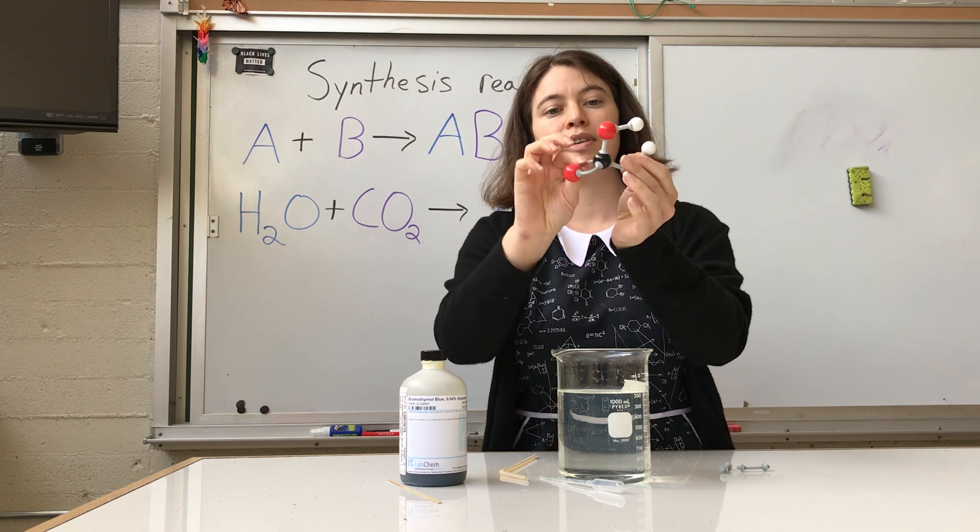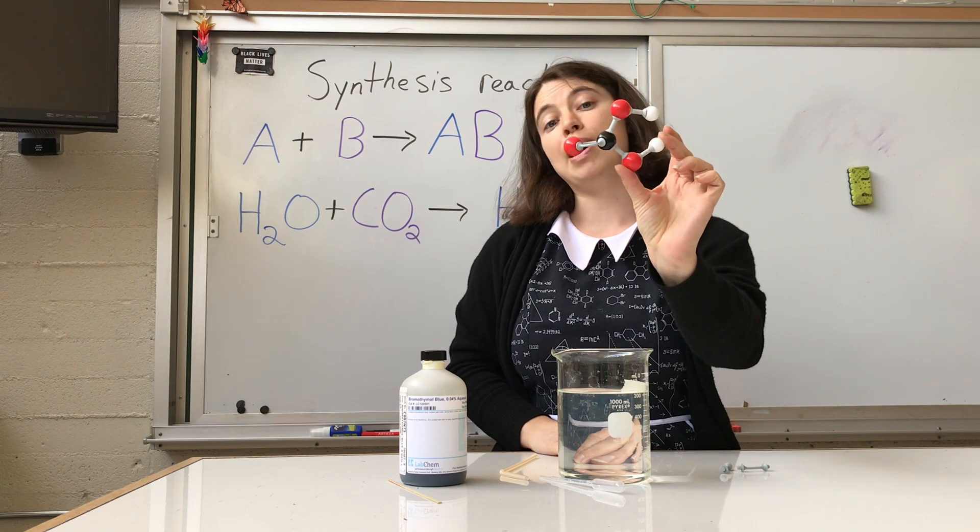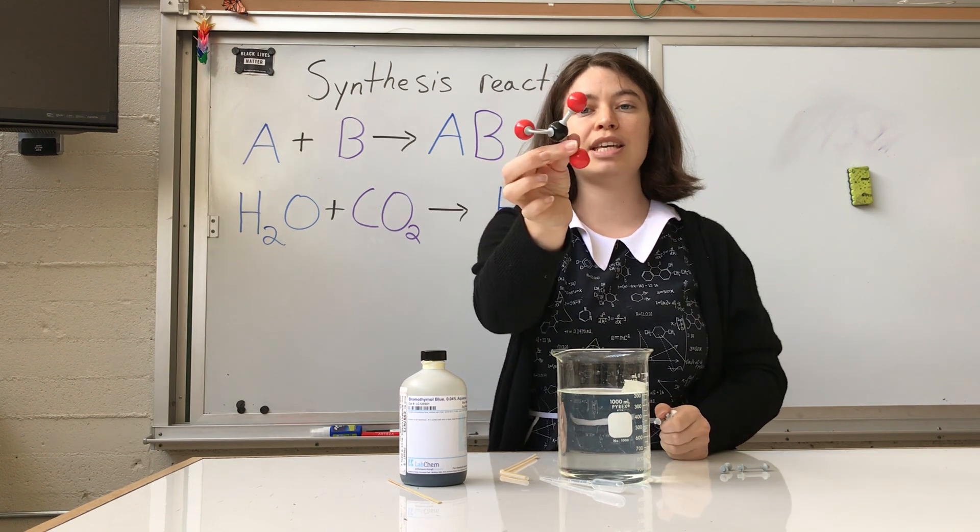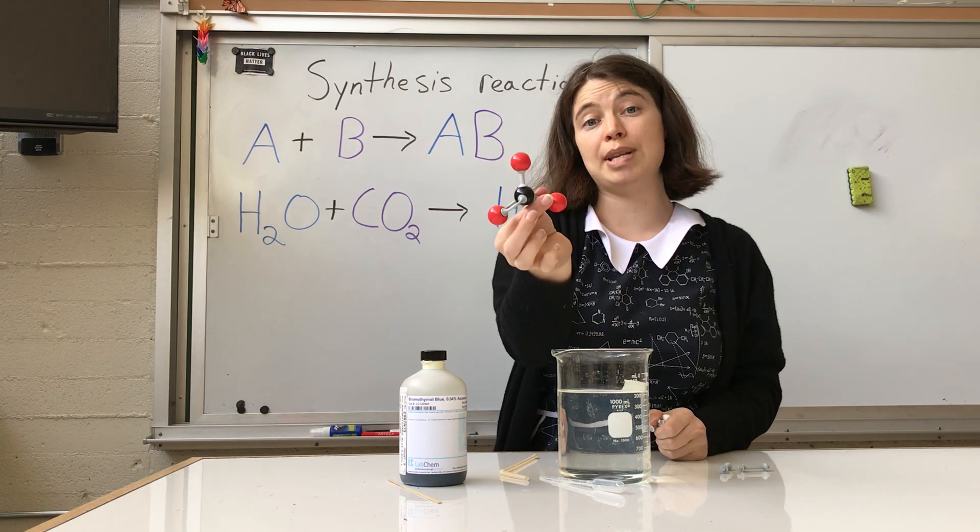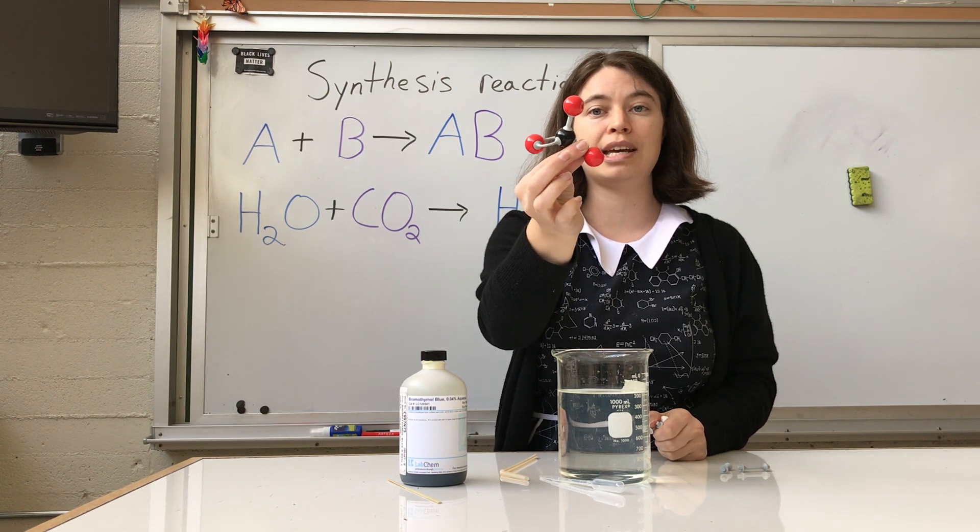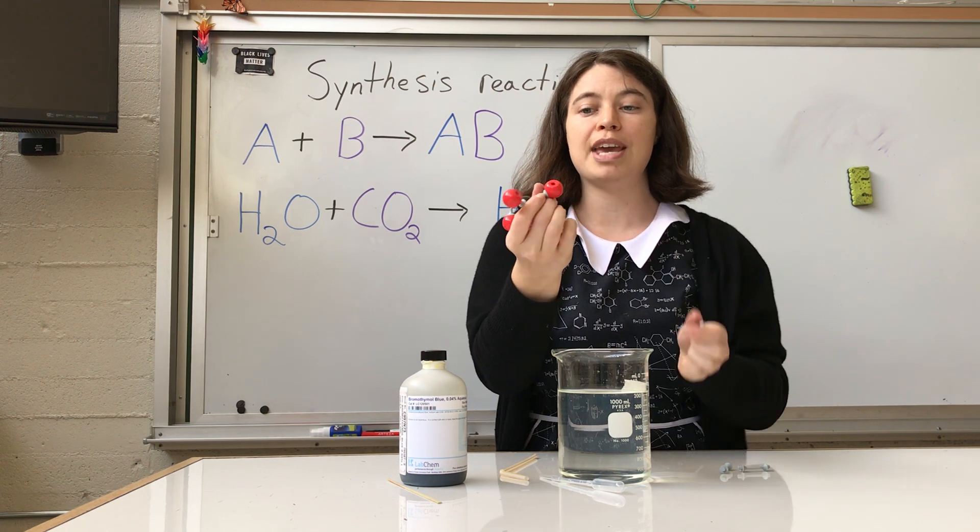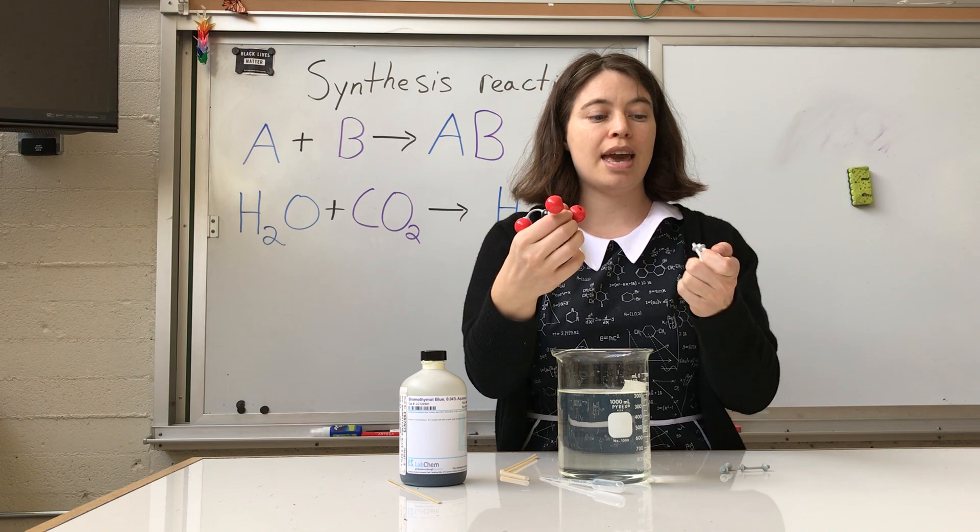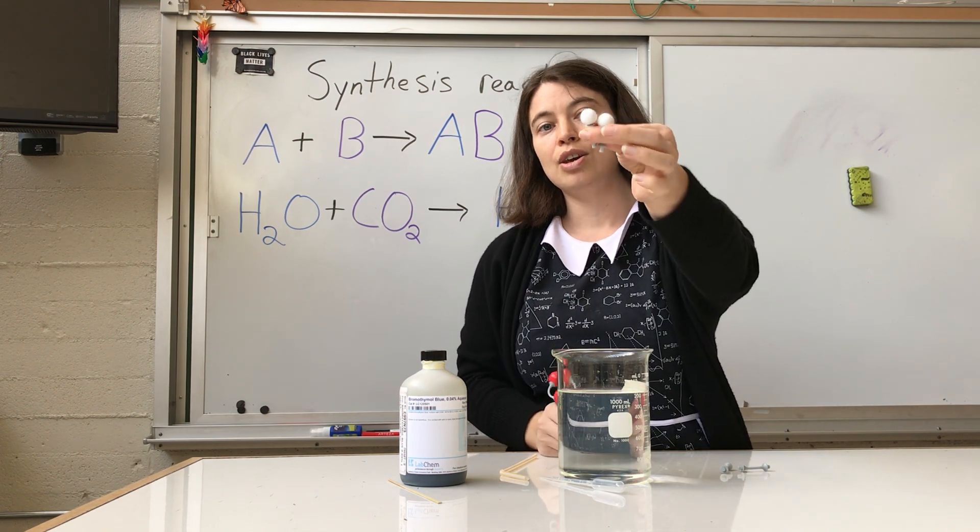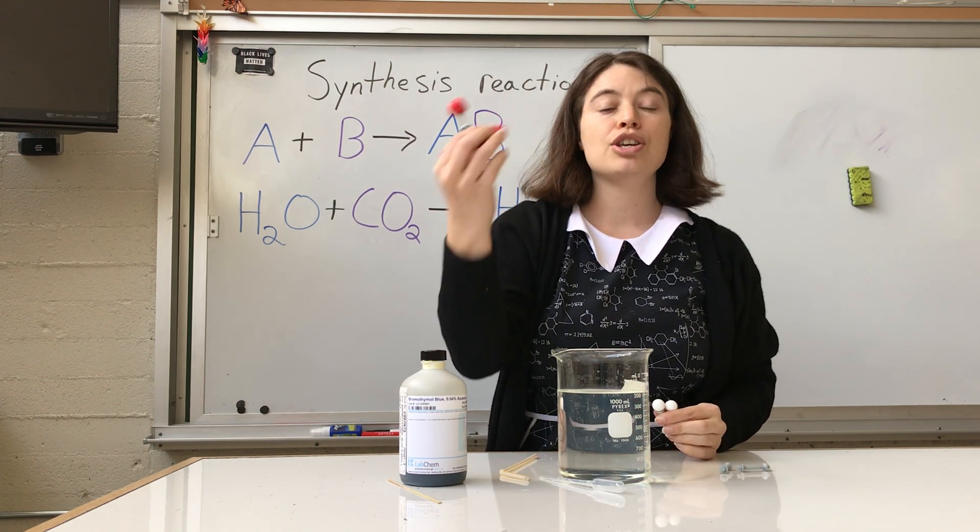And here I have something called carbonic acid. This is called carbonic acid because this part right here is actually a polyatomic anion called carbonate, CO3. Carbonate is another one of those polyatomic anions. It has a charge of minus two. You can see there's two spots where this carbonate can have more bonds come in.